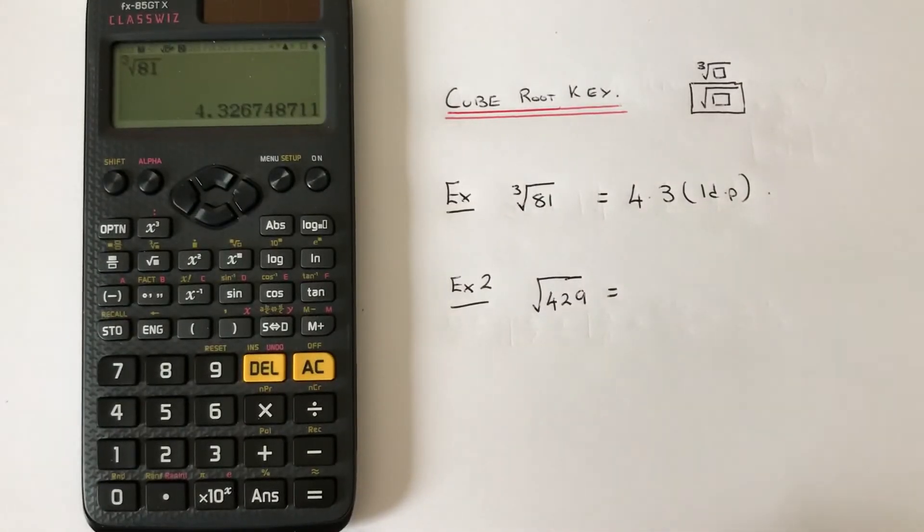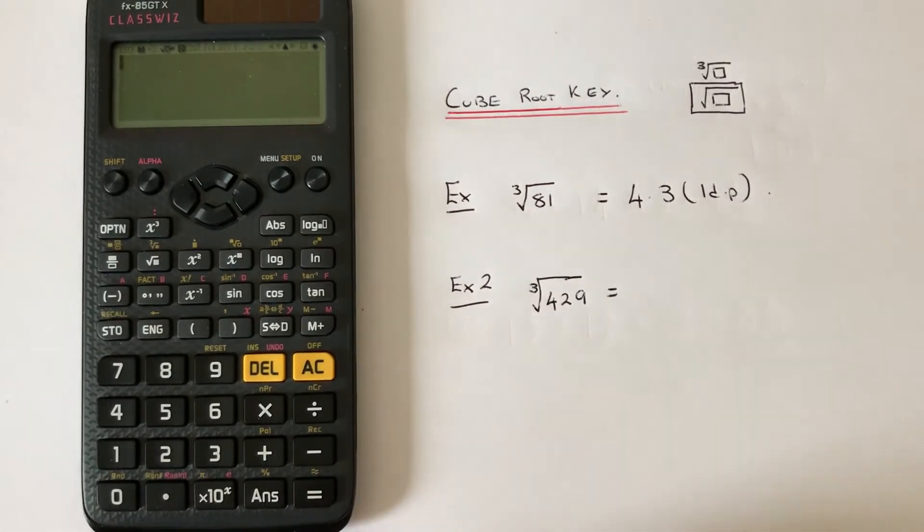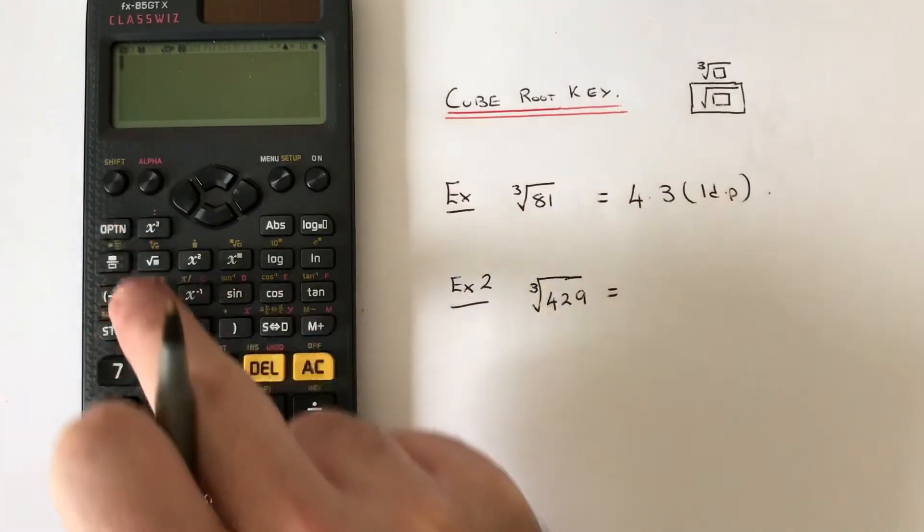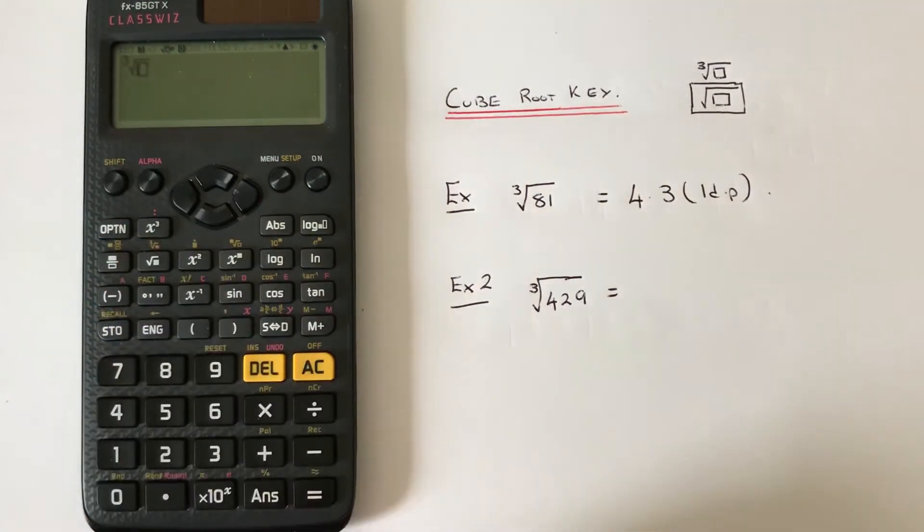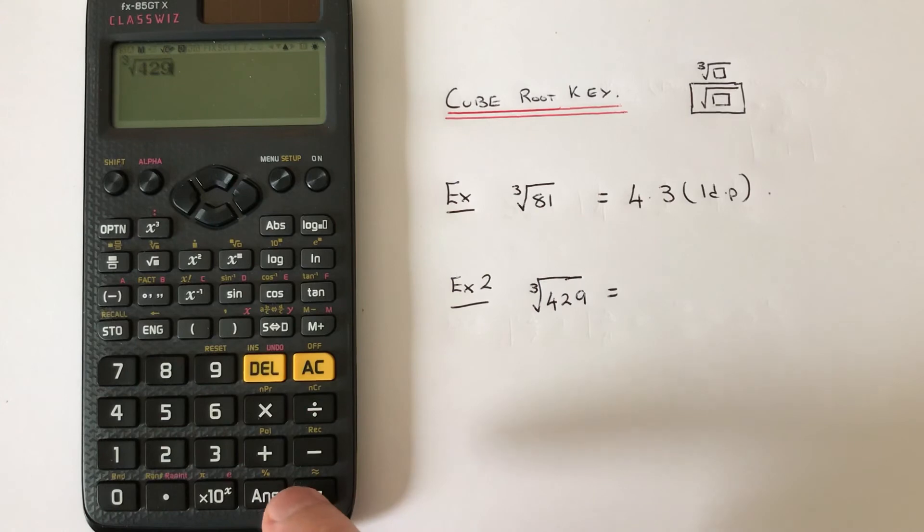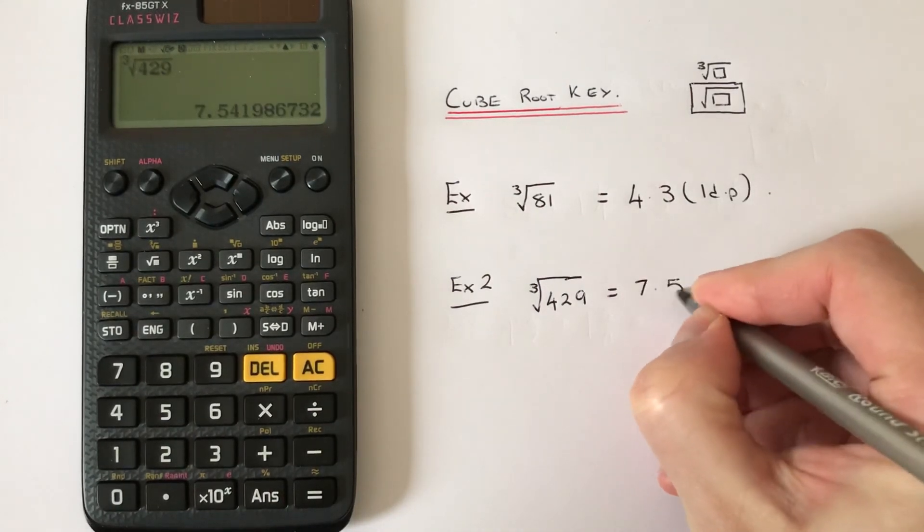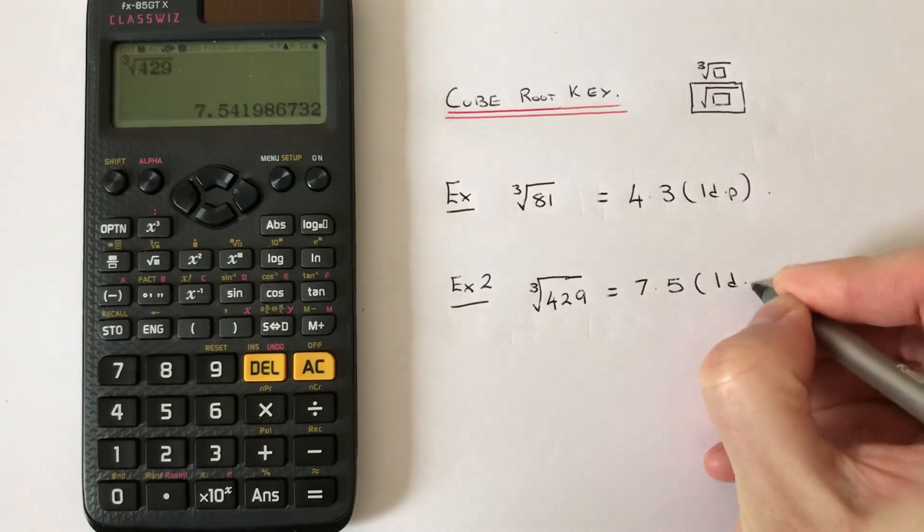Let's have a look at our second example. This time we've got the cube root of 429. Press the shift square root key, so you see the cube root comes up on the screen. Then type in 429, press equals, and we get 7.5 to one decimal place.